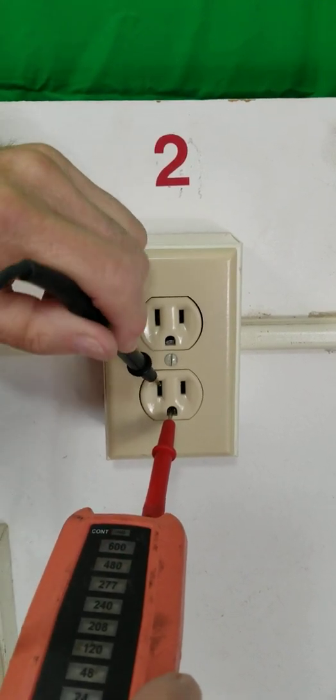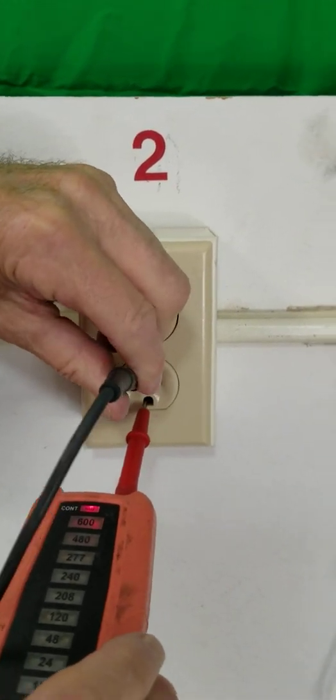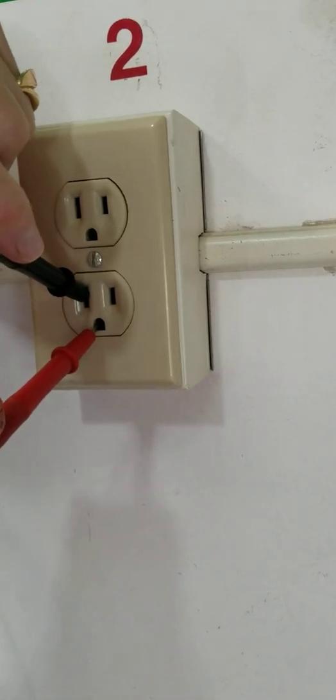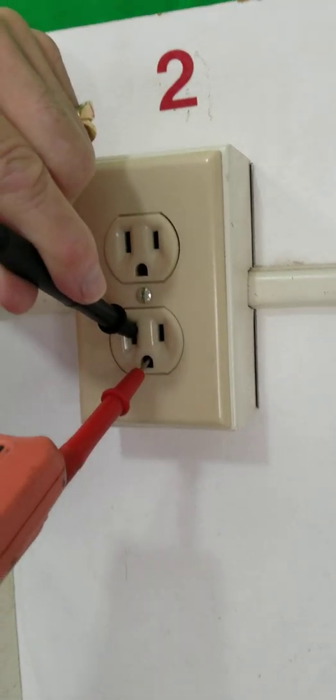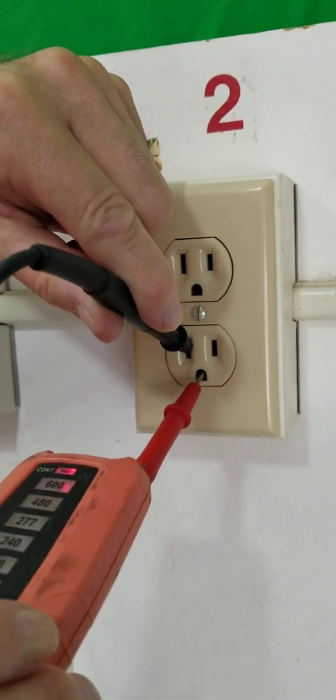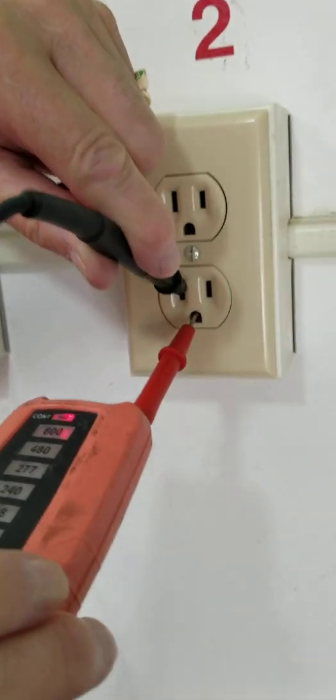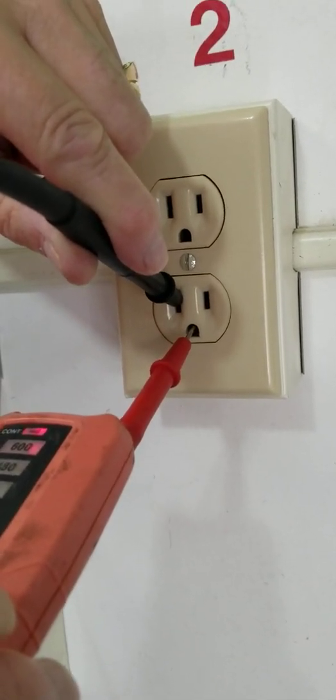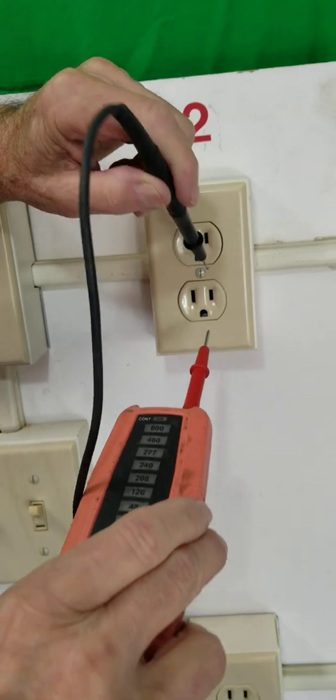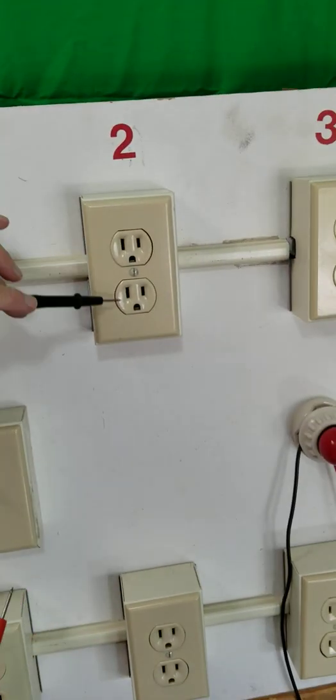If I go from the ground to the neutral, I'm showing continuity. And why is that so? Because at the main electric service, the grounds and the neutrals are tied together. So this one is properly wired.